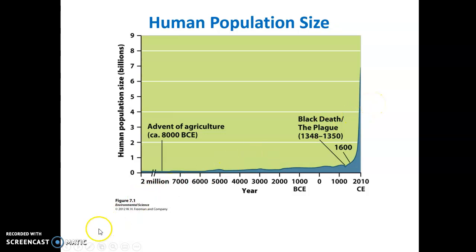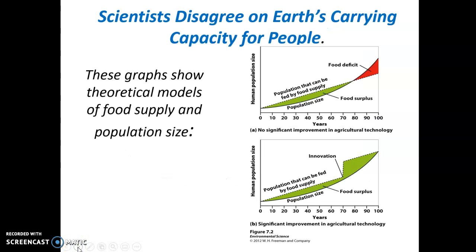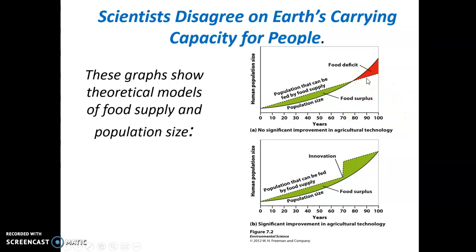Scientists have different models regarding food supply and population size. Some models show that populations continue to grow in a J-shaped fashion while the food supply increases more as a straight logistical curve, leading to a food deficit where there will not be enough food for the human population. Other scientists believe that innovation, particularly in agricultural technology, will lead to plenty of food in the future. More scientists do tend to be concerned about a food deficit, and we'll look at that more when we cover food production and agriculture in a couple of chapters.